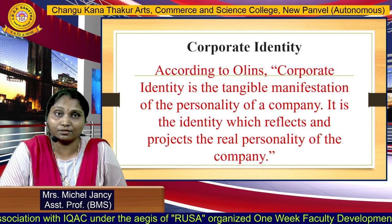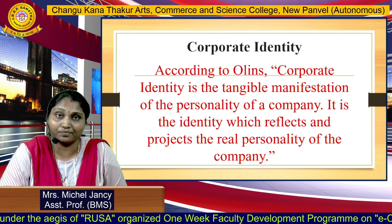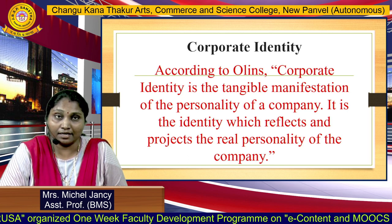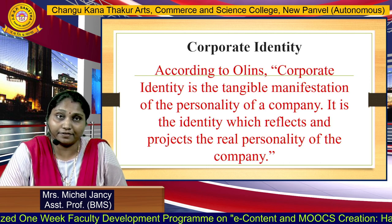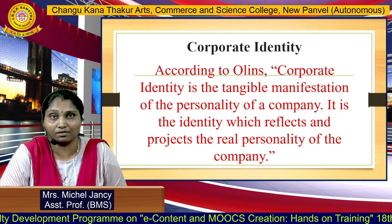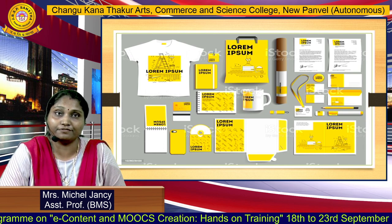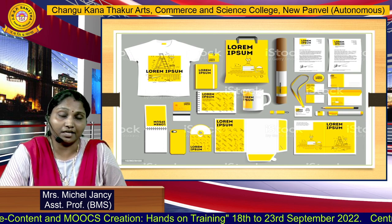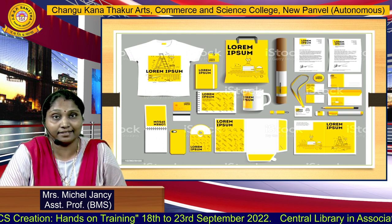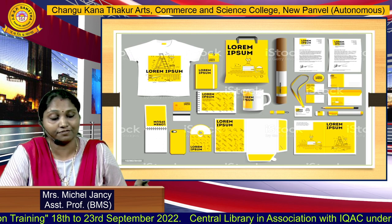Corporate identity, according to Olins, is a tangible manifestation of the personality of a company. It is the identity which reflects and projects the real personality of the company. In simple words, the effort put in by the organization to create a recognition for itself is called corporate identity. Examples include the uniforms of staff, the identity cards, calendars printed with the organization's name, and the letterheads.